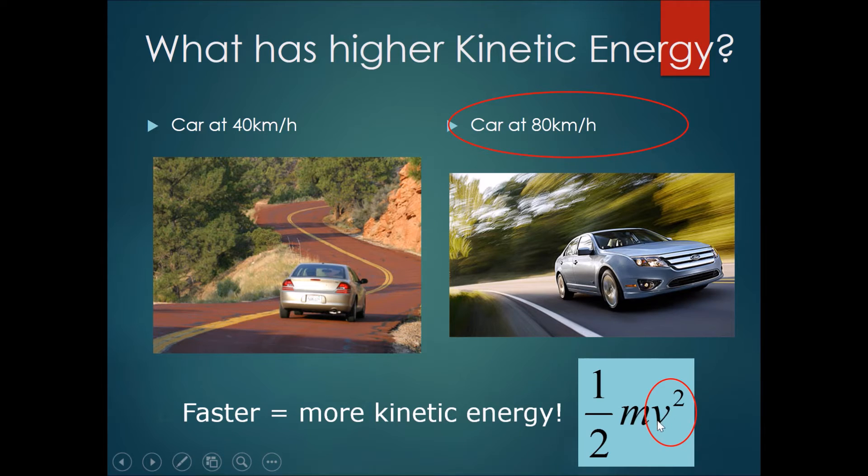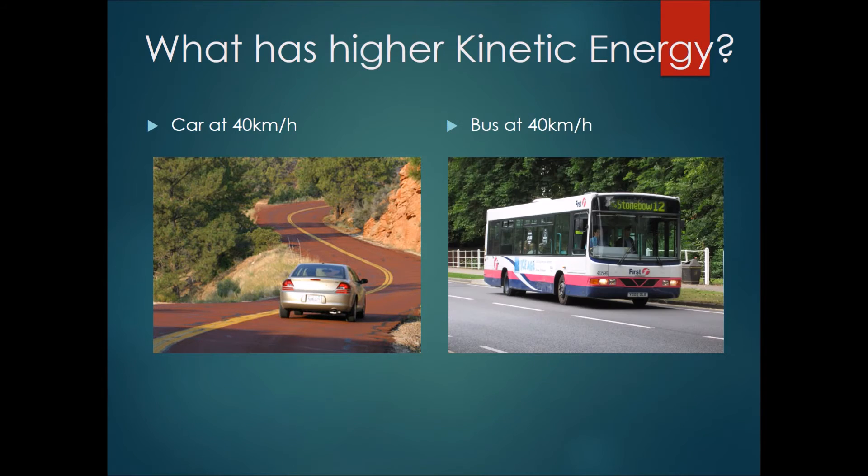Now let's look at this scenario. These two vehicles are moving at exactly the same speed. However, one is a car, presumably with less mass, and one is a bus, presumably with more mass.